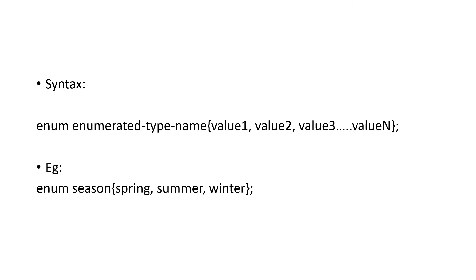Syntax of enum is: enum is a keyword, then the name of that enumeration, that is the enumerator type name. You have to give a name and values within brackets. For example, enum season is a name and spring, summer and winter are the values corresponding to the season.